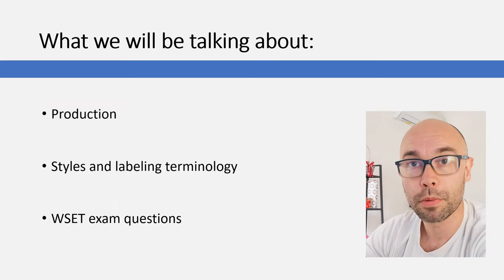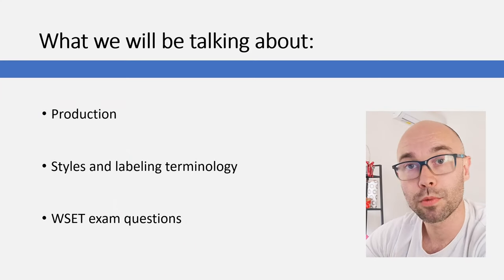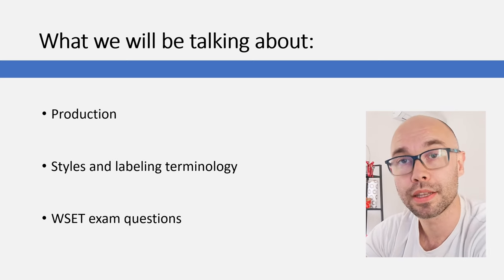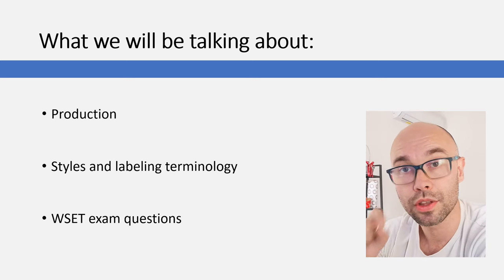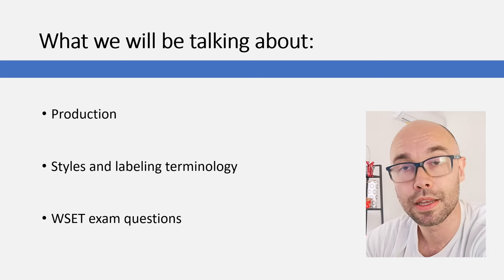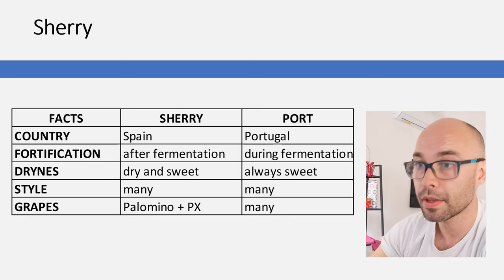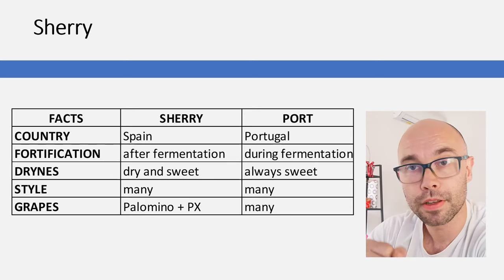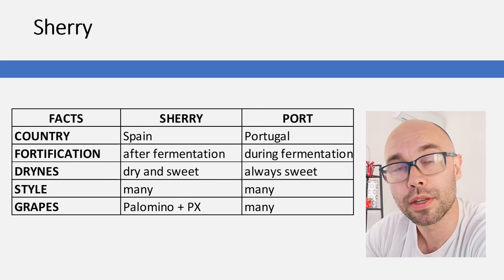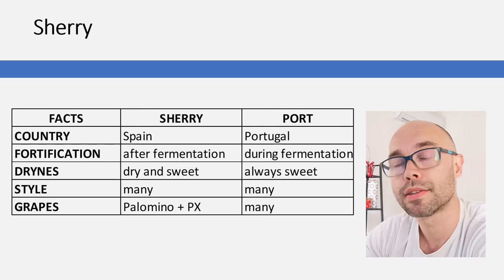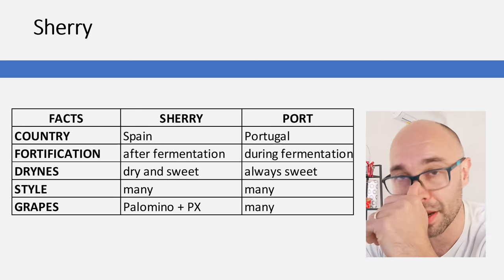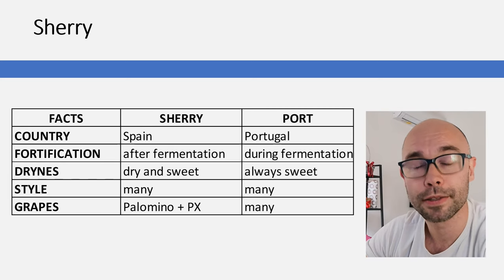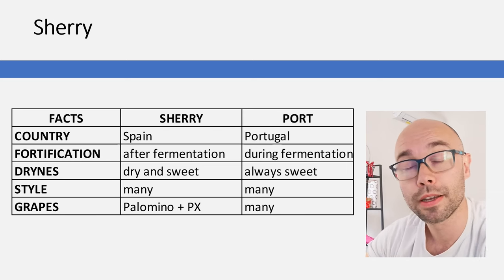In today's video we will talk about fortified wines. I'll cover everything you need to know for WSET Level 2: production, different styles, labeling terminology, and at the end I will answer 10 WSET multiple choice type questions. The two fortified wines you need to know for WSET Level 2 are sherry and port wine. Both are fortified wines with different types and styles.